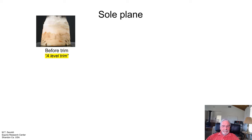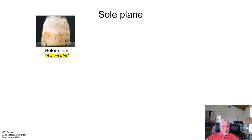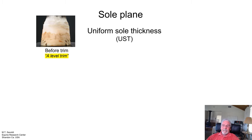This is our foot before trim, and the foot has been trimmed to a level trim. All our textbooks say we trim a level foot for a level shoe. But to improve our industry and develop modern farrier science, let's take a look at uniform sole thickness — UST — and what it means.